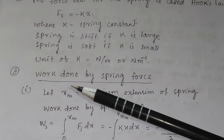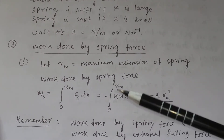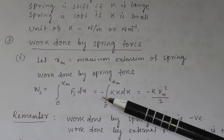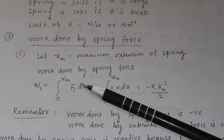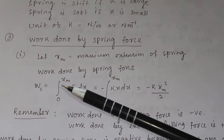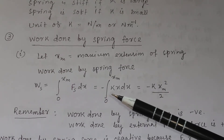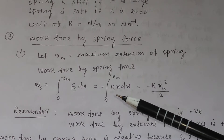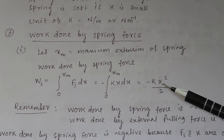Now let us discuss the work done by the spring force. Suppose the maximum extension of the spring is xm. The work done by the spring force, Ws, is equal to the integration of fs dx, because the spring force is a variable force. For a variable force, work done is written as the integral of fx dx from 0 to xm. Substituting fs = -kx, this becomes the integral of -kx dx from 0 to xm, which equals -½kxm².